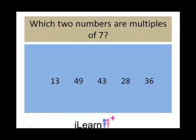Which two numbers are multiples of 7? We need to be quite quick at our times tables. Which two numbers are multiples of 7? 49 and 28. Which two numbers are multiples of 6? 42 and 36.